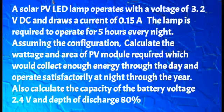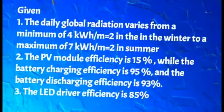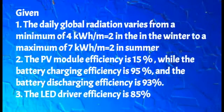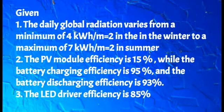We also need to calculate the capacity of the battery if the battery voltage is 2.4 volt and the depth of discharge is 80 percent. The daily global radiation varies from a minimum of 4 kilowatt hour per meter square in winter to a maximum of 7 kilowatt hour per meter square in summer. The photovoltaic module efficiency is 15 percent, battery charging efficiency is 95 percent, battery discharging efficiency is 93 percent, and the LED driver efficiency is 85 percent.